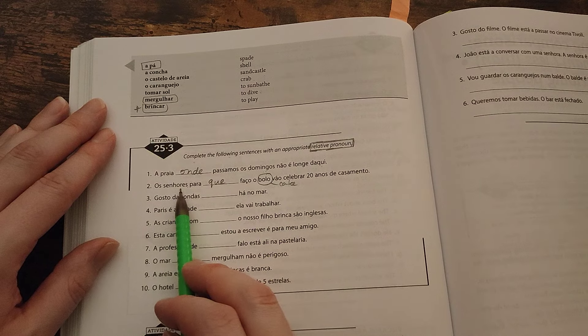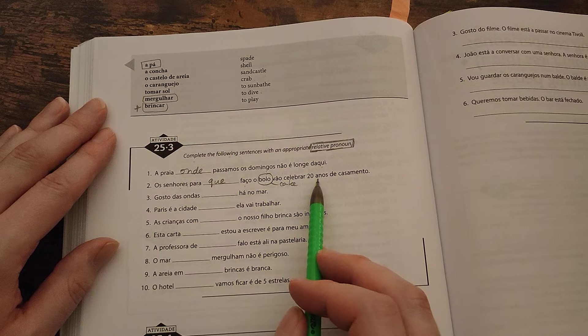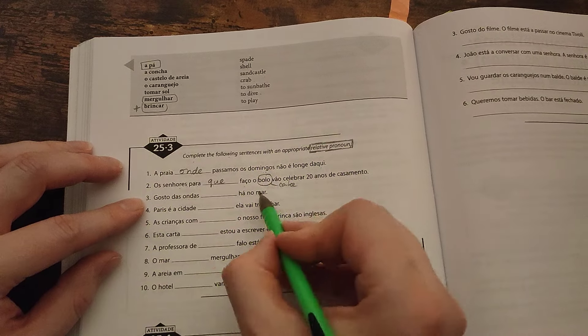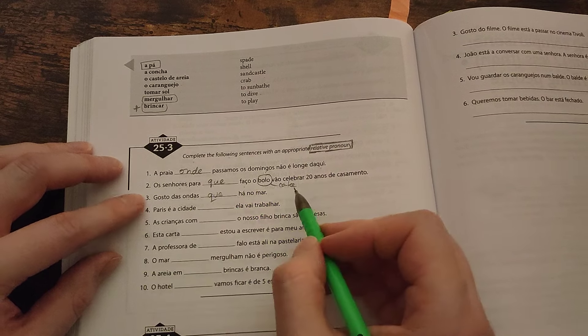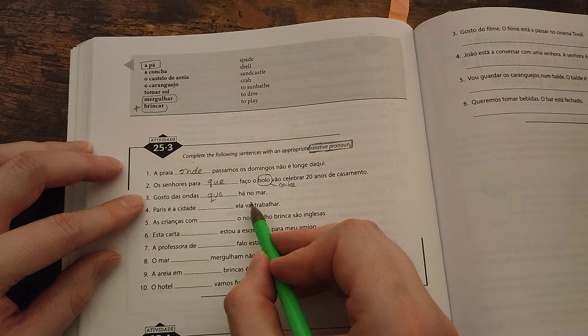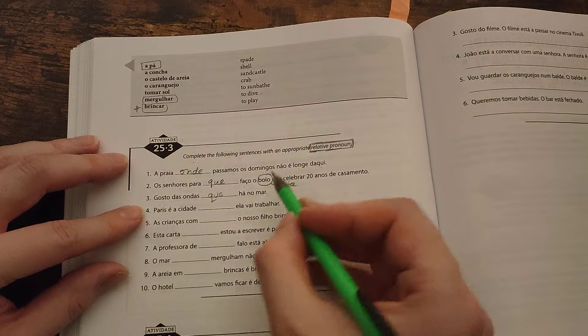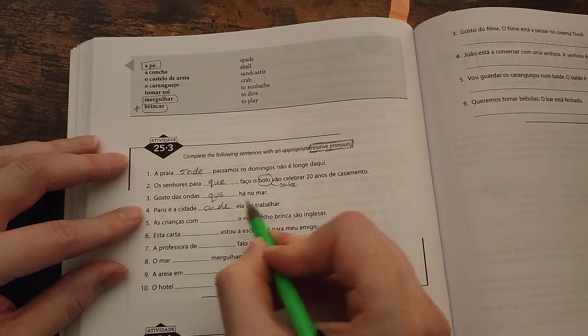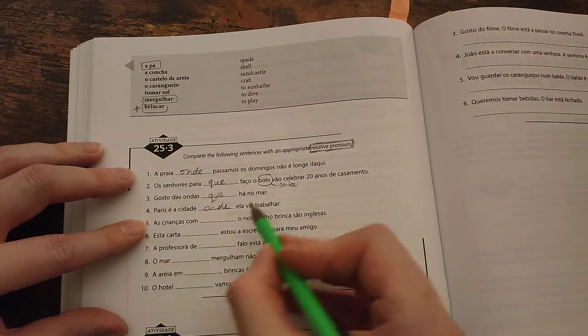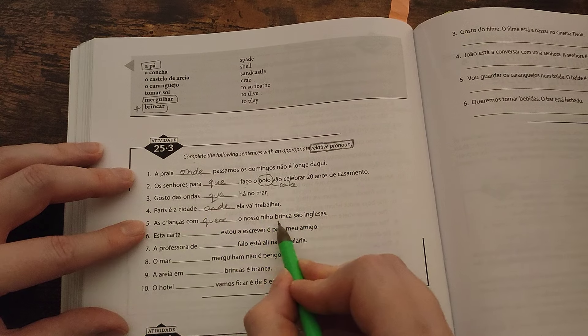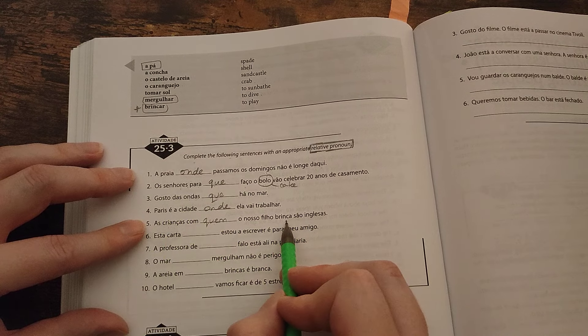The men, or it could be men, or the men and women, for whom I make the cake are going to celebrate twenty years of marriage. Gosto de todas as ondas que há no mar. I like waves which are in the sea. Paris é a cidade onde ela vai trabalhar. As crianças com quem o nosso filho brinca são inglesas. The girls with whom our child, our son, is playing are English.